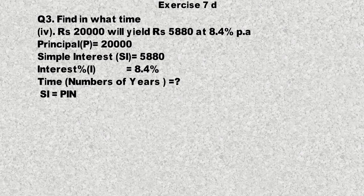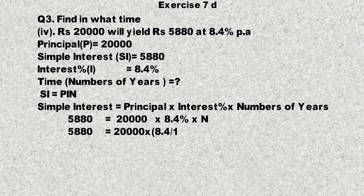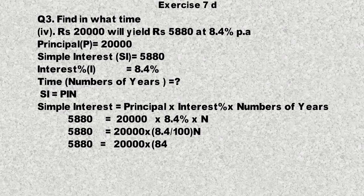Simple Interest = Principal × Interest Percent × Number of Years۔ قیمتیں لکھیں: 5880 = 20000 × 8.4/100 × n۔ اشاریہ ختم کرنے کے لیے نیچے 10 لگائیں گے، 8.4 = 84/1000 بن جائے گا۔ تین صفر تین صفر سے کٹ جائیں گے اور 20 × 84n = 5880 رہ جائے گا۔